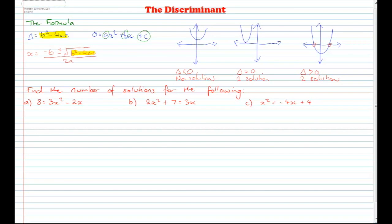Alright, so finally we've got find the number of solutions for the following. We've got a: 8 equals 3x squared minus 2x. b: 2x squared plus 7 equals 3x. And c: x squared equals negative 4x plus 4.